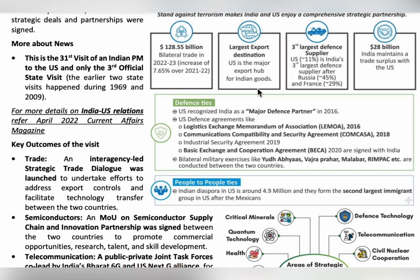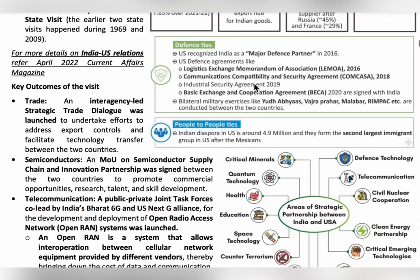India has made four major defense agreements with the US. The first is the Logistics Exchange Memorandum of Association (2016). The second is the Communication Compatibility and Security Agreement (2018). The third is the International Security Agreement (2019). The fourth is the Basic Exchange and Cooperation Agreement (2020). Both countries also participate in military exercises like Yudh Abhyas, Vajra Prahar, Malabar, and Rim of the Pacific.